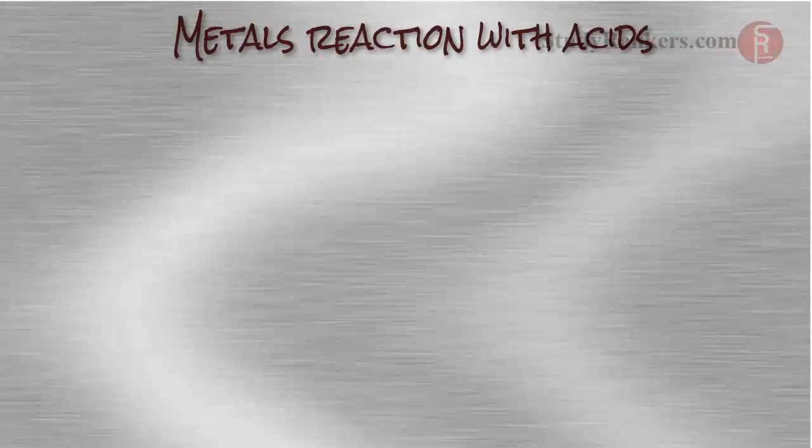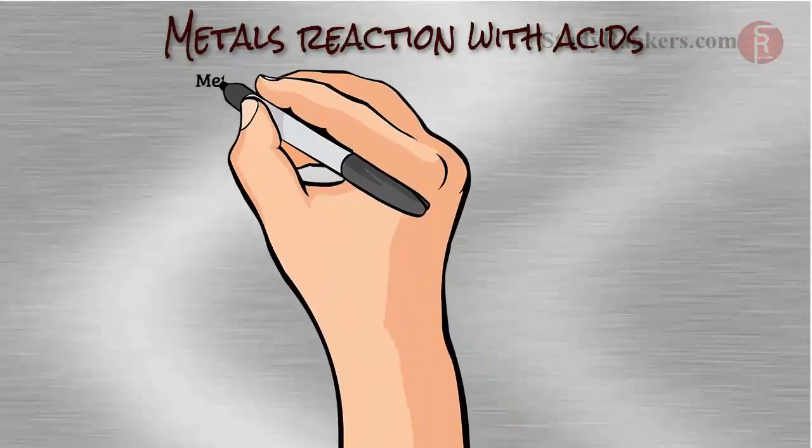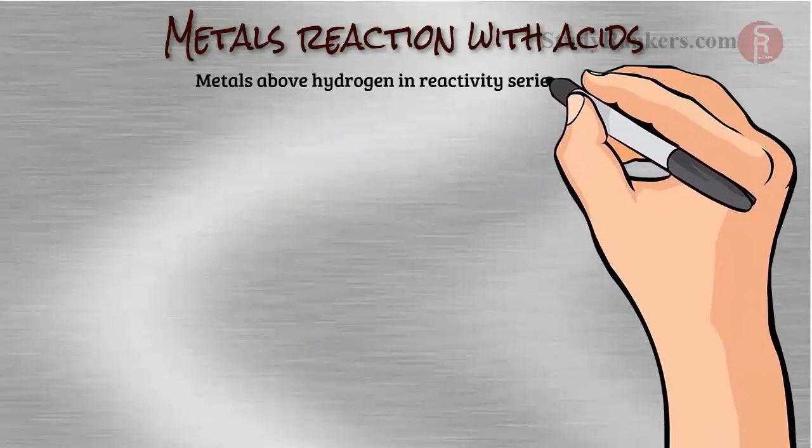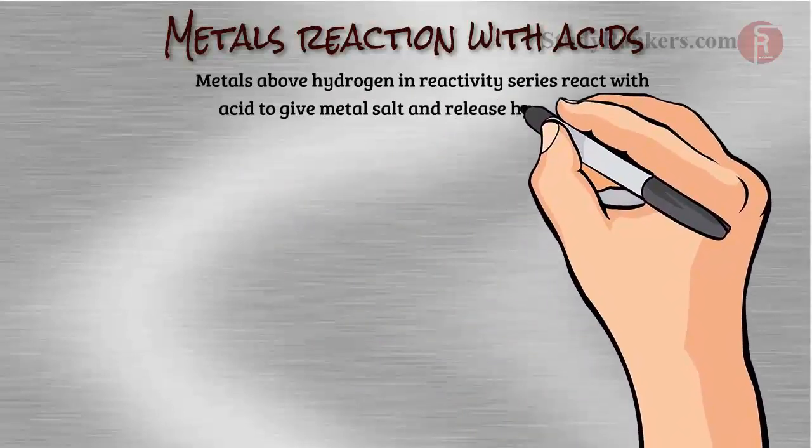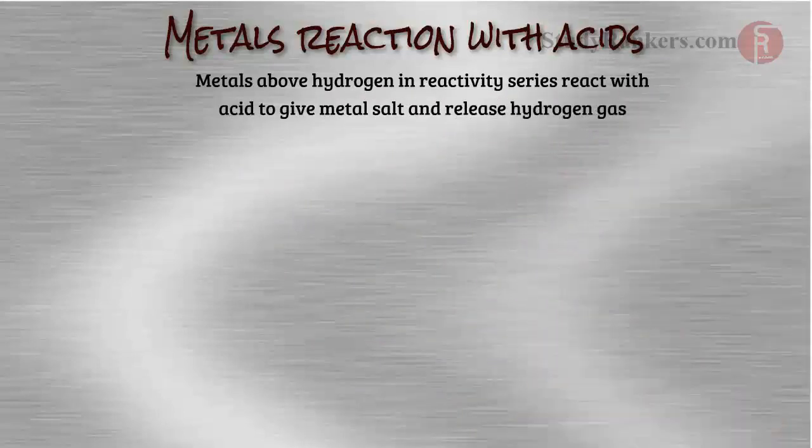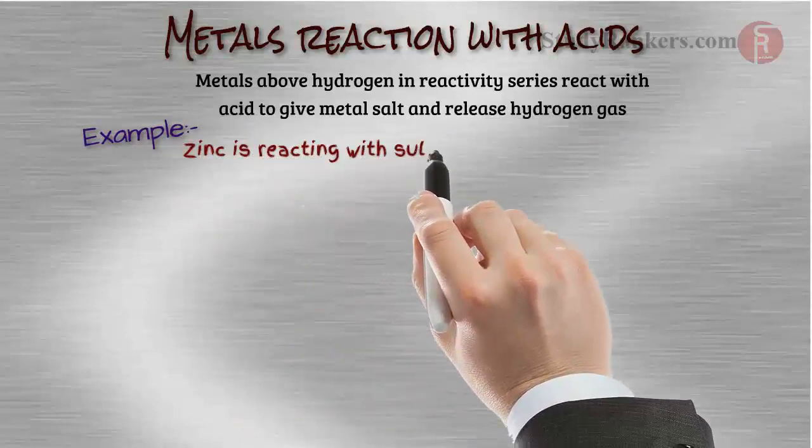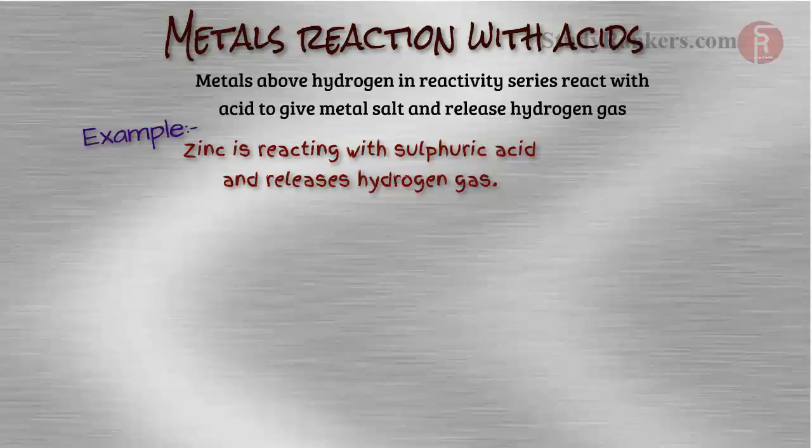Now we will discuss metals' reaction with acids. Metals above hydrogen in the reactivity series react with acid to give metal salt and release hydrogen gas. We have discussed such reactions in acid-base chapter. Here is an example: Zinc is reacting with sulfuric acid and releases hydrogen gas. This is the equation of the reaction: Zn reacts with H2SO4, that will give ZnSO4 plus H2.